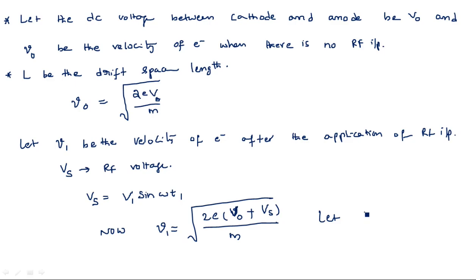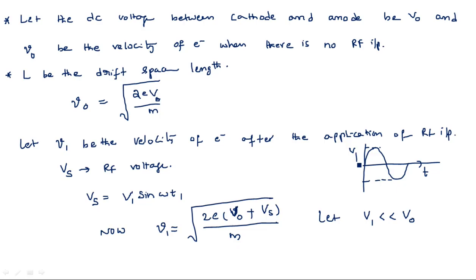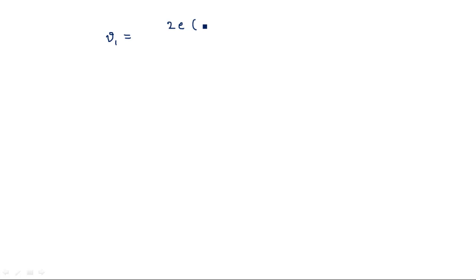Let us assume that capital V1 — the amplitude of the sinusoidal RF signal — is very small compared to V naught, the applied DC voltage, which is very high compared to the amplitude of the sinusoidal signal. If you take the RF input voltage signal, time is on the x-axis and the amplitude capital V1 is on the y-axis. Note that capital V refers to voltage and small v refers to velocity.